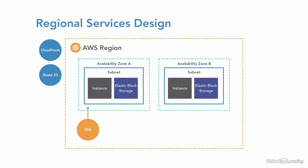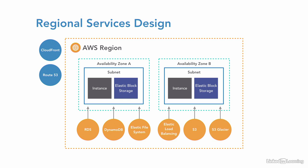Outside of the data center where your compute resources are running, you might be connecting to an RDS database, a DynamoDB database, or elastic file systems for sharing resources between Linux servers. Maybe you want a load balancer, S3 buckets, or archiving. It wouldn't make sense to have all of these resources in the same concrete building, and Amazon doesn't do that. They spread these resources throughout the region so there is failover with these services — if the data centers go down, your other resources that you've ordered are still online.